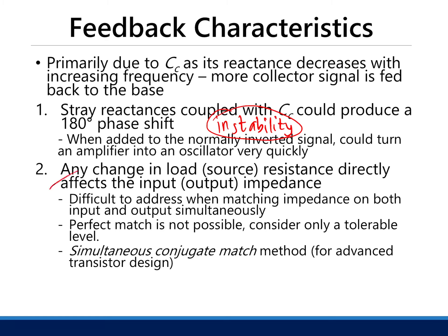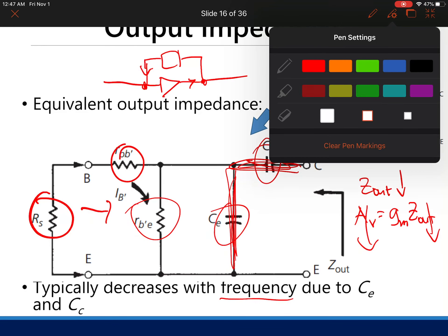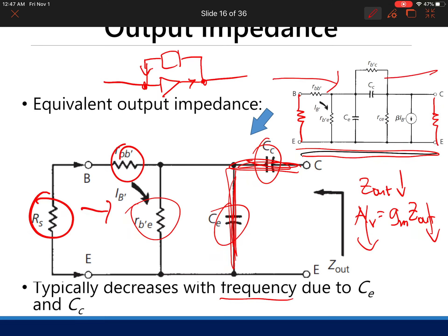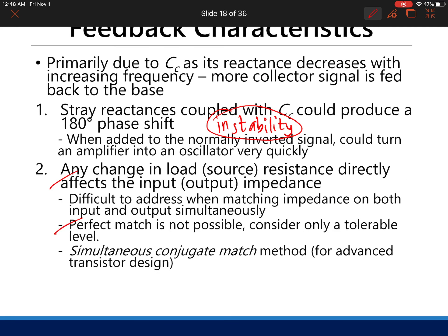Because of the feedback characteristic, your output and input are coupled to each other. If you connect RS and RL to the equivalent circuit, they affect each other's behavior — Zout becomes a function of RS and Zin becomes a function of RL. This makes designing a perfect match not possible; only a tolerable level of match can be achieved. There is also an advanced simultaneous conjugate match method for advanced transistor design.